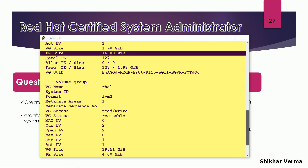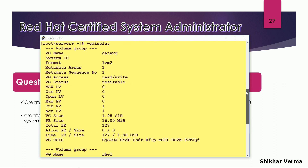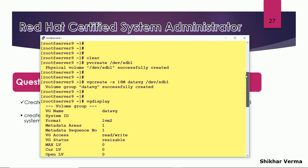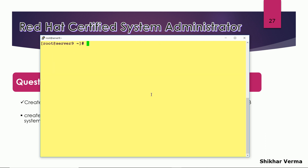There is another VG that was created earlier by the system, and you can see its default PE size is 4 MB. That is why we have to use the option vgcreate -s to specify the extent size. So the first part has been completed.